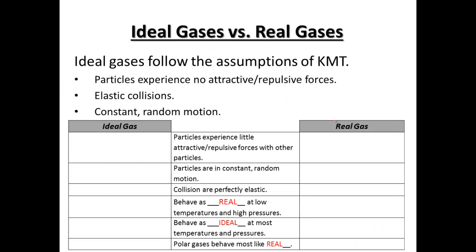So real life versus our ideal life. Ideal is what we've been dealing with. Real life, you know, it doesn't quite work out as easy as we'd like. So ideal gas follows a few assumptions from KMT or Kinetic Molecular Theory. Particles experience no attractive or repulsive forces. They're all elastic collisions. They're in constant random motion. So just check through a little flow chart here.